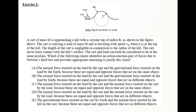The normal force exerted on the load by the cart and the gravitational force — this is wrong because we're talking about two different types of forces. The normal force exerted on the load by the cart and the normal force exerted on the cart by the load — this might be correct because both are normal forces, they are the same type, acting on two different bodies. The correct answer is: these are equal and opposite forces acting on different objects.